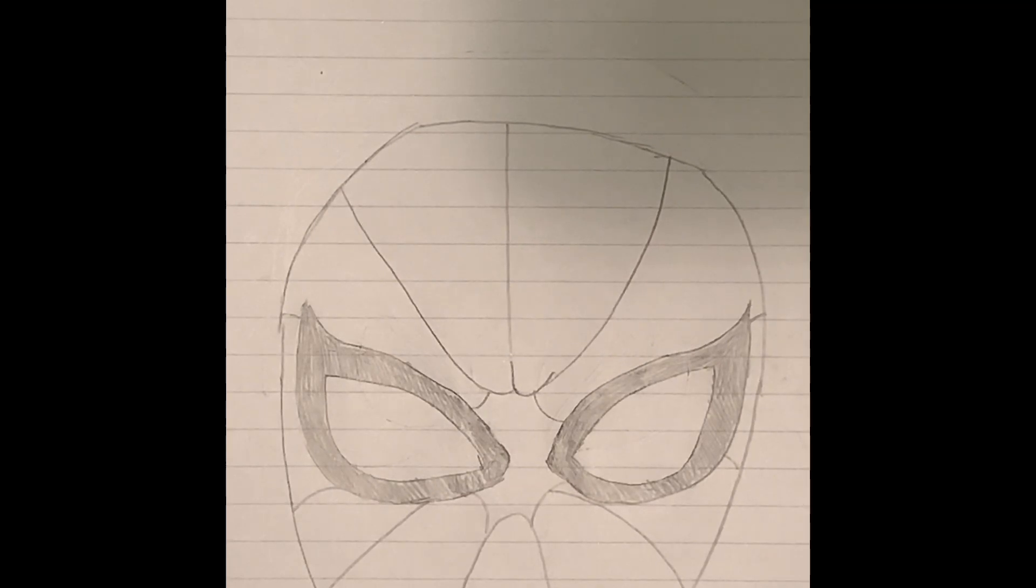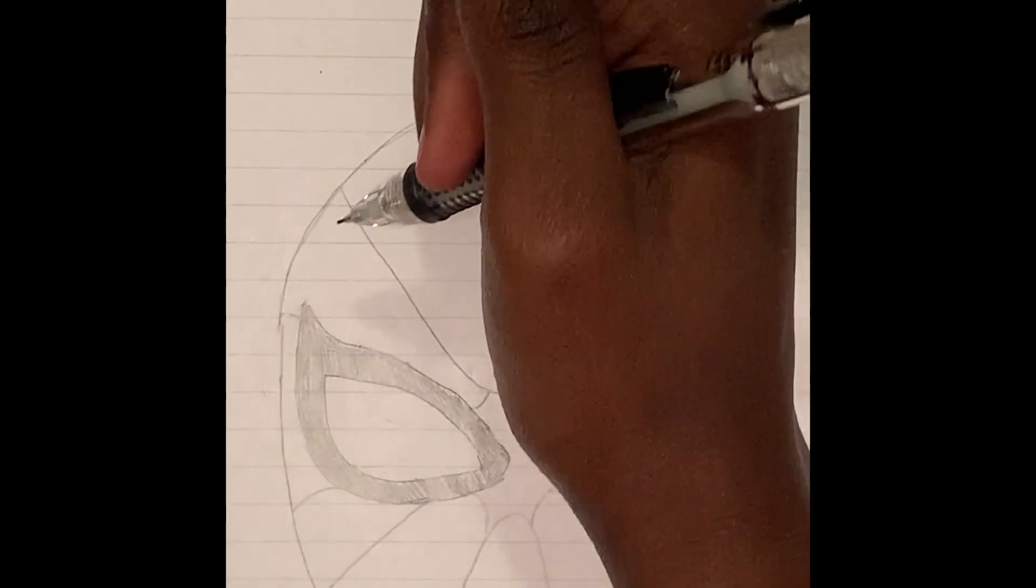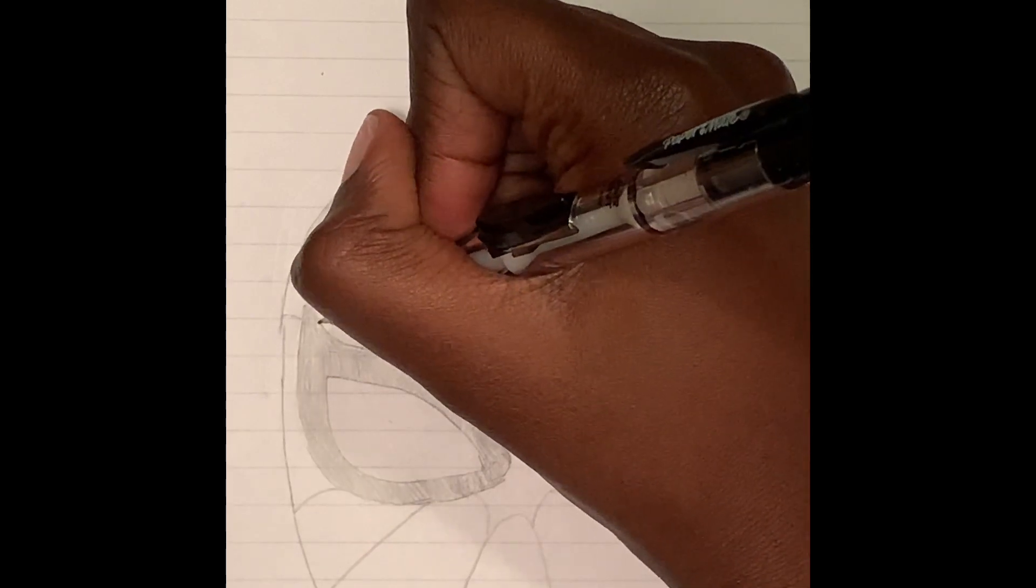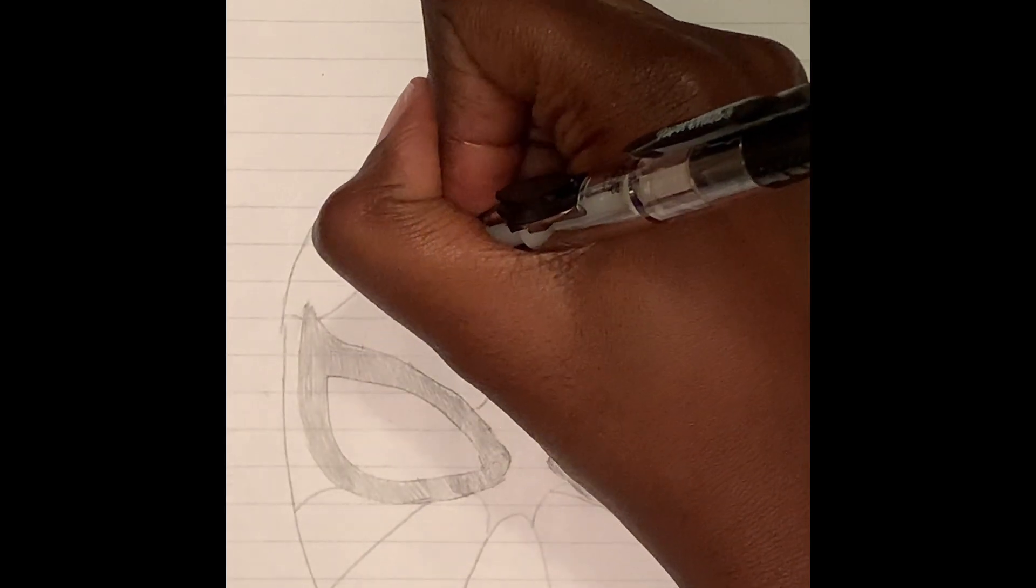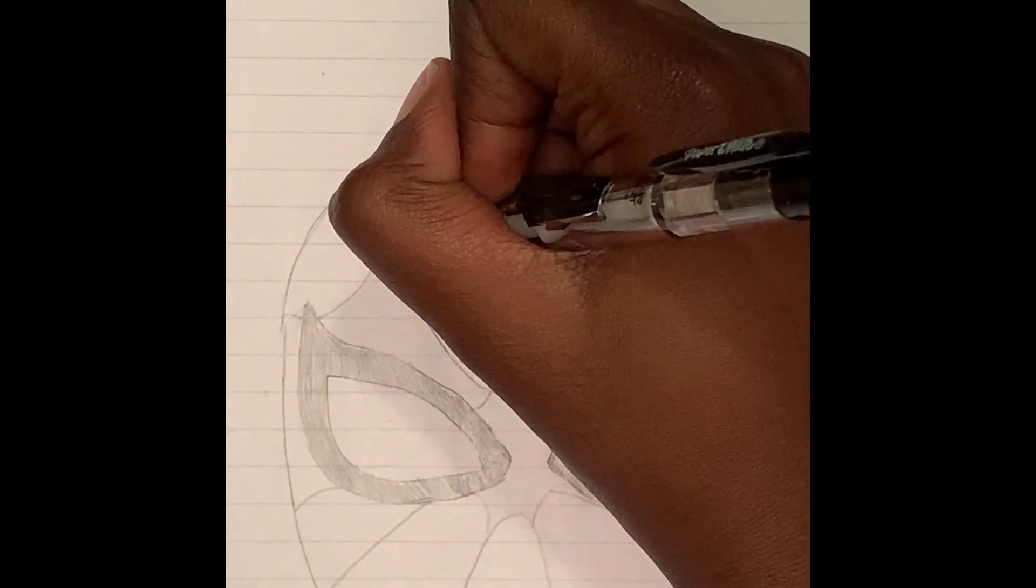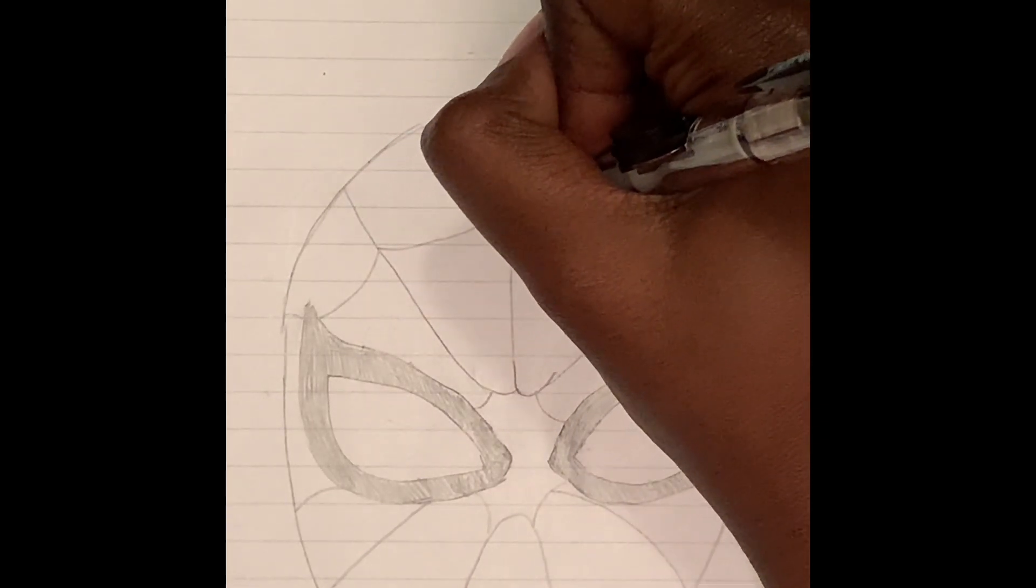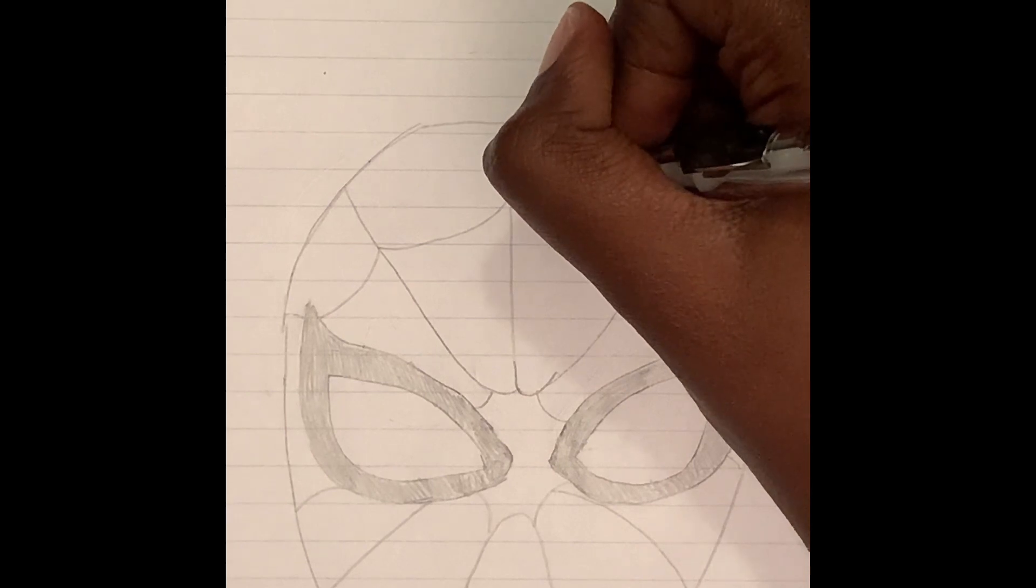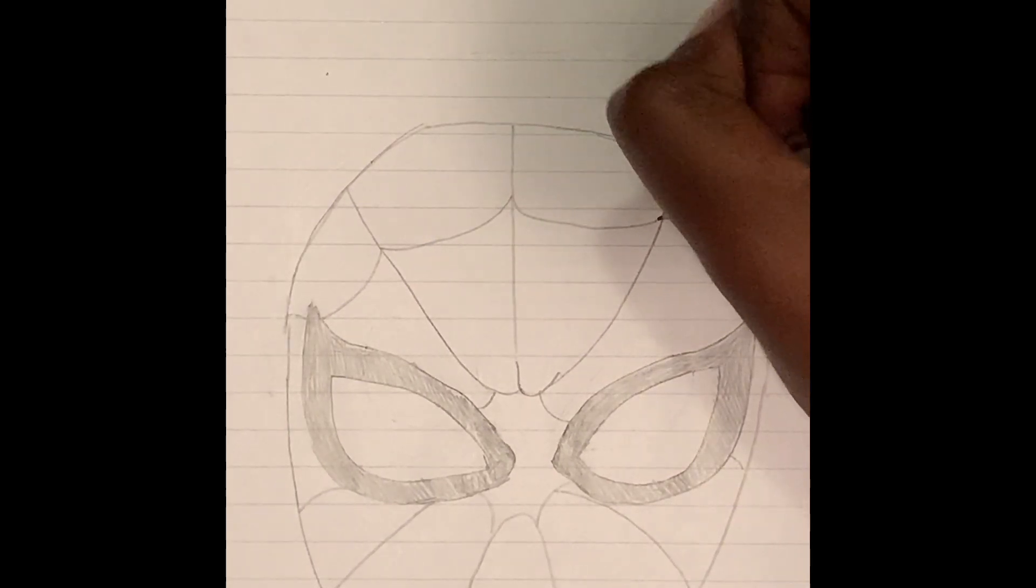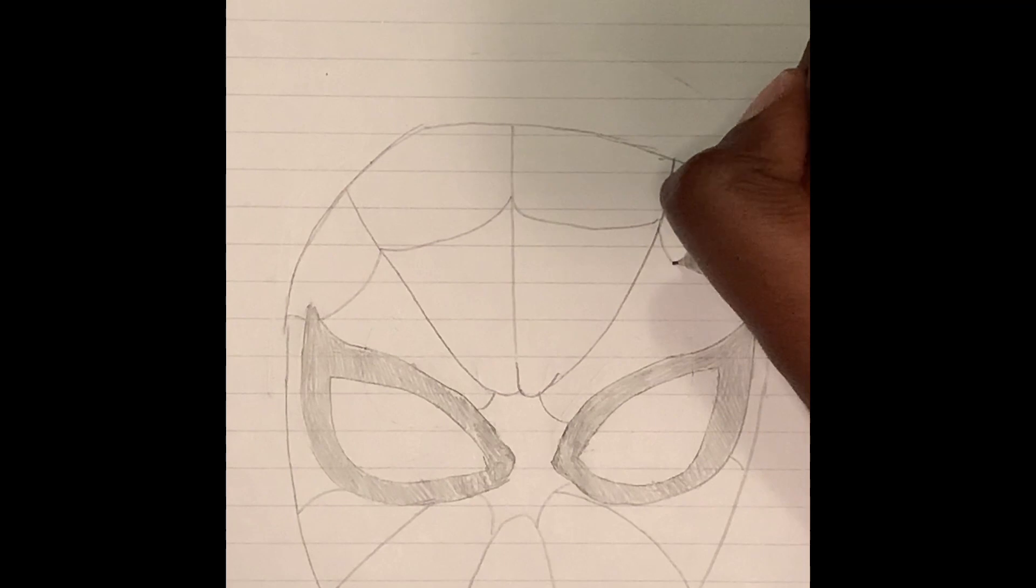So now we can start doing the webs. You can start from here and do like a little curve, like so. And you just keep going like that.